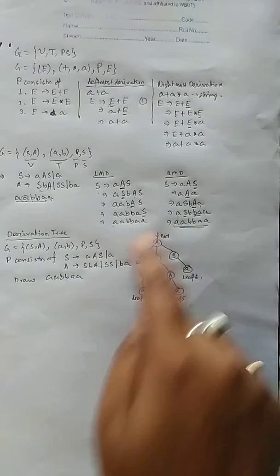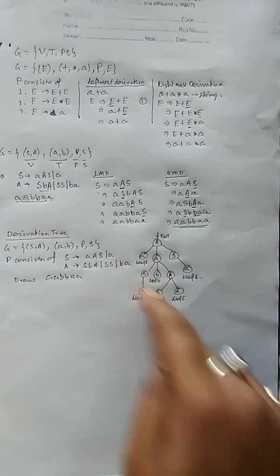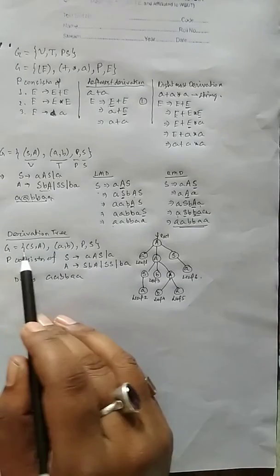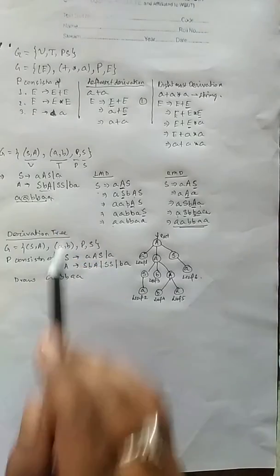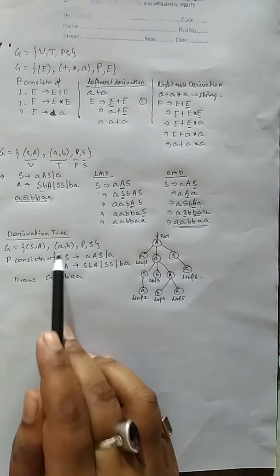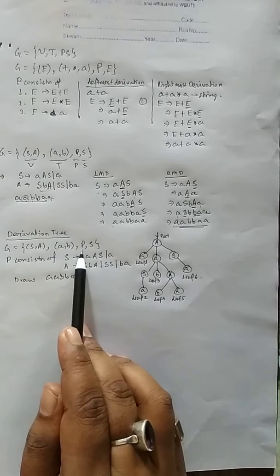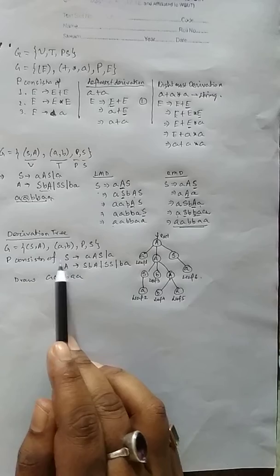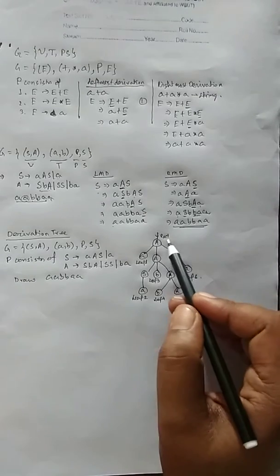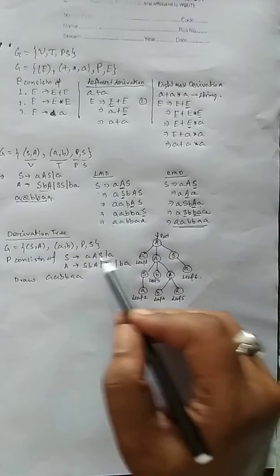I have used the leftmost derivation over here to generate this. Let's see what basically happened. It is given that G equals SA. I just copied this over here. G is SA, this is V, this is T, this is the production, and this is the start symbol. The production rule is given in this fashion. Starting, I get S to a a s.